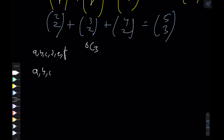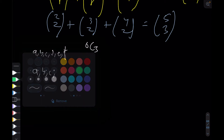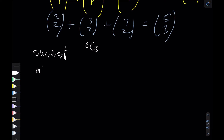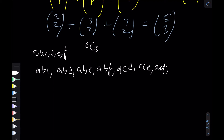I fix a in its place and keep changing the rest. So all the combinations containing a are: ABC, ABD, ABE, ABF, then ACD, ACE, ACF, then ADE, ADF, and finally AEF. These are all the combinations that contain the element a.